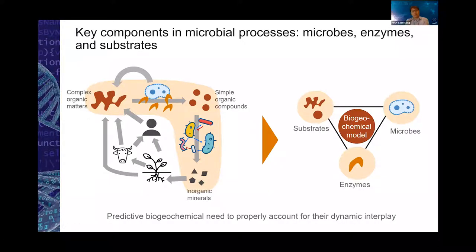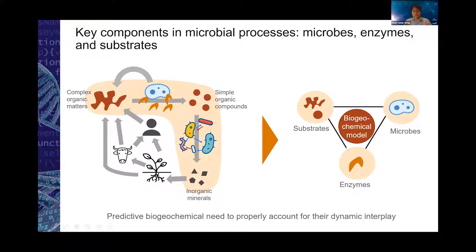We can extract three key factors that drive this biogeochemical cycle. First is microbes, of course, and also enzymes. Enzymes are important to break down complex carbon to simpler forms, and also substrate. Therefore, to make our biogeochemical model predictive, it's important to account for these three key factors and their dynamic interplay. That is the key for making our model more critical.